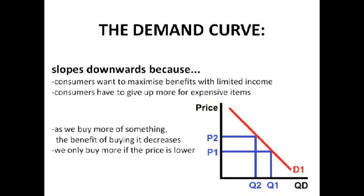One question you might be asking yourself is why does the demand curve slope downwards? Consumers want to maximise the benefit they can get from buying goods and services with their limited income. An expensive item has a higher opportunity cost, so people think they might not get that expensive item because they can get lots of cheaper items for the same price. More people can afford to buy cheaper items, so market demand for them is much greater.